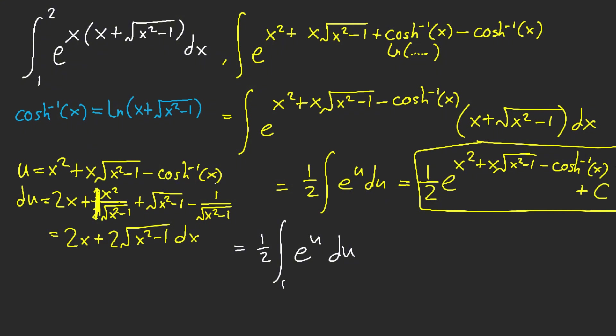Then plug in two. We get four plus two root three, then minus the ln of two plus root three. I believe that's that. And then this is now equal to e to the u. So that's e to the four plus two root three with minus two plus root three like that. And then minus e. I believe that's it. That seems right.